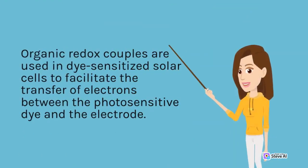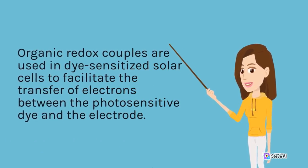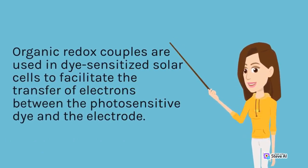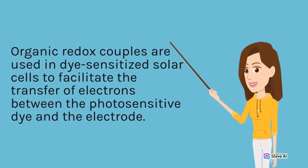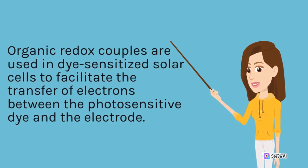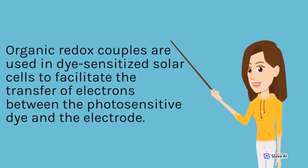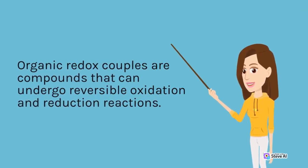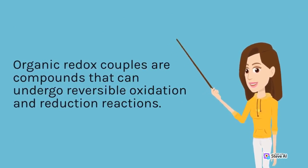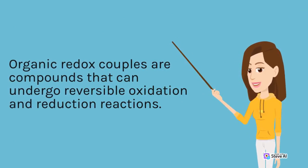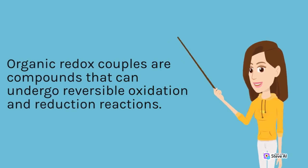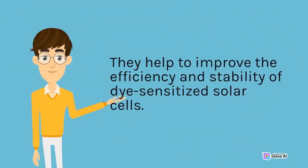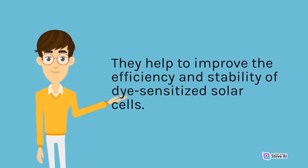Organic redox couples are used in dye-sensitized solar cells to facilitate the transfer of electrons between the photosensitive dye and the electrode. They are compounds that can undergo reversible oxidation and reduction reactions, and help to improve the efficiency and stability of dye-sensitized solar cells.